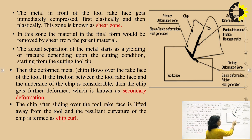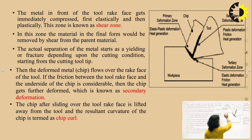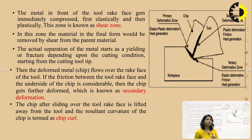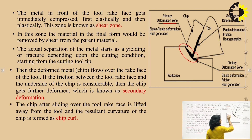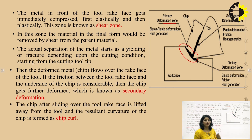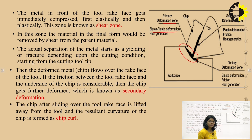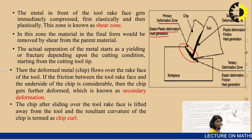We will now see the mechanism of how the chip will be formed and how the material will get deformed. In this diagram, you can see the workpiece, the tool, and the three deformation zones: the primary deformation zone, secondary deformation zone, and tertiary deformation zone. The primary deformation zone is along the shear plane — here material first deforms elastically and then plastically. This elasto-plastic deformation generates heat due to friction and high temperature.